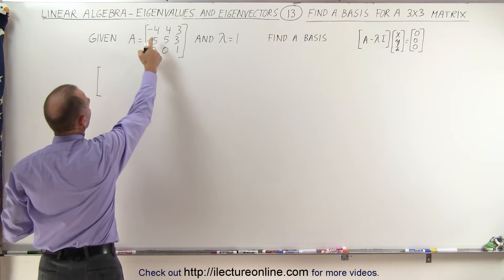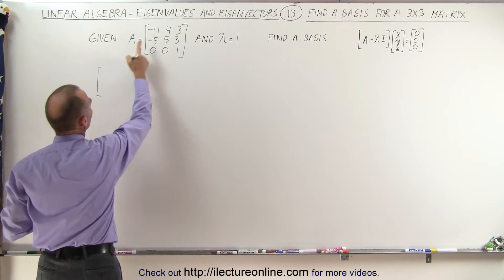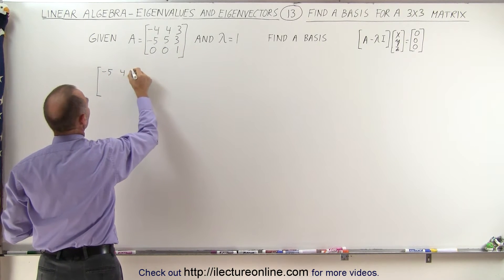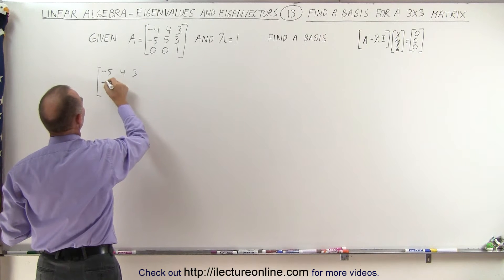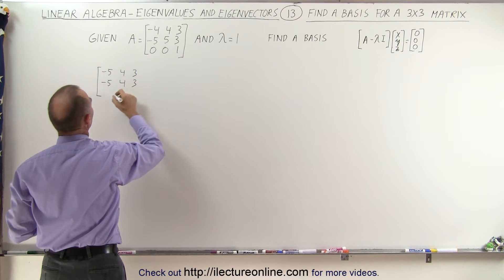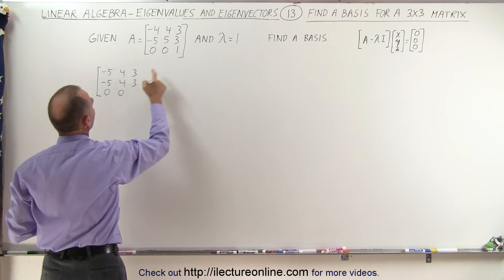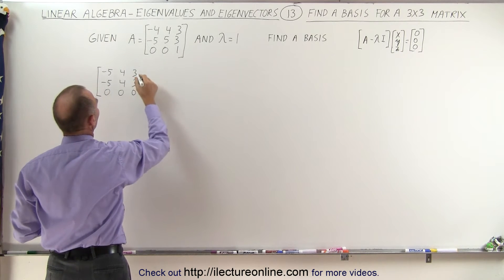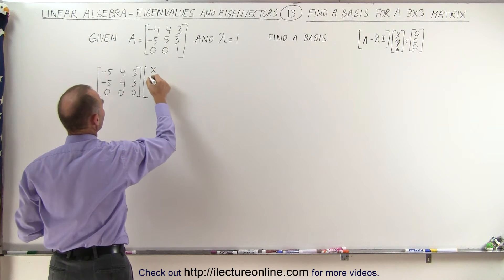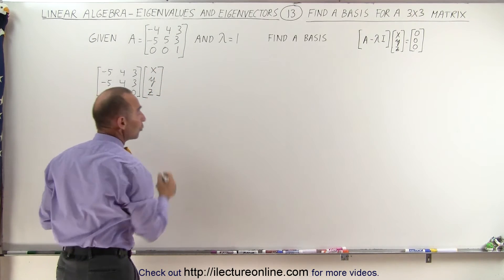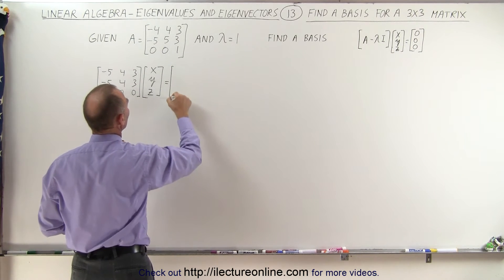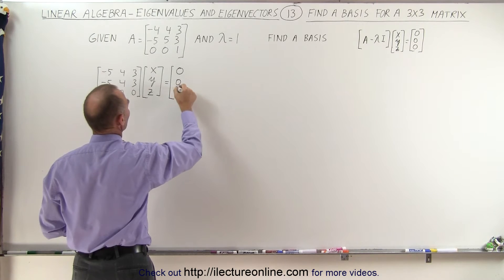First we take the matrix. We get minus 4 minus 1 becomes minus 5, and we have 4 and 3. Then minus 5, 5 minus 1 is 4, and 3, and we get 0, 0, and 1 minus 1 is 0. So we multiply that times the eigenvector x, y, and z — you could also use x1, x2, and x3 — and set it equal to the zero vector: 0, 0, 0.